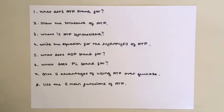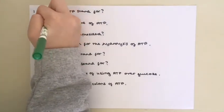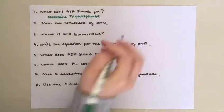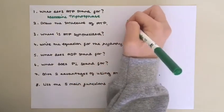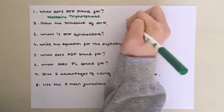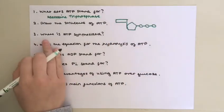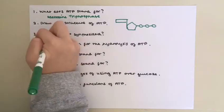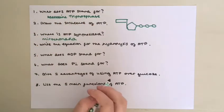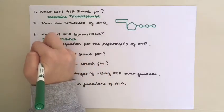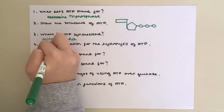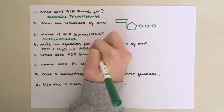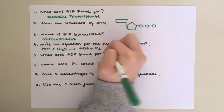Question one, ATP stands for adenosine triphosphate. Draw the structure of ATP. Question three, where is ATP synthesized? In the mitochondria. The hydrolysis of ATP is ATP plus water reacts to form ADP plus inorganic phosphate plus energy.